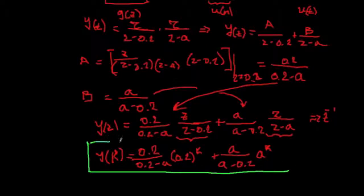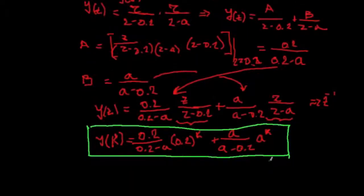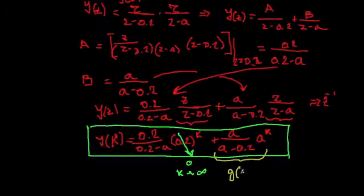So, interestingly enough, we obtain the solution, and now we see the following. That if the system is stable, like in this case, this entire term will go to 0 as k goes to infinity. In other words, what will survive is just this term. But what is this term? This term is nothing but G at a, times A(k) sequence.